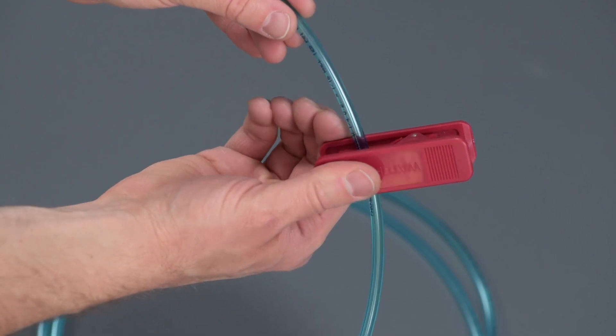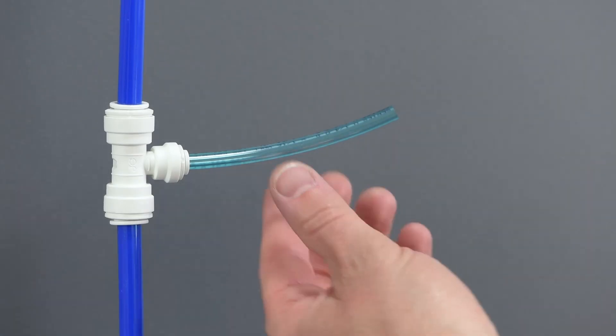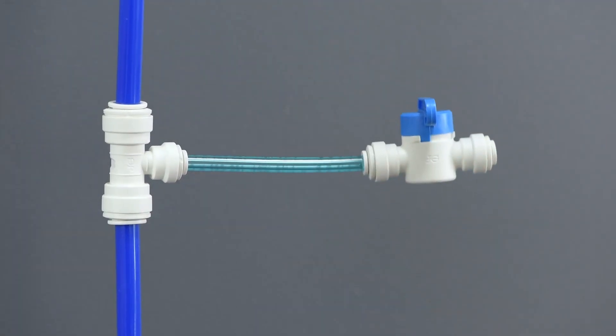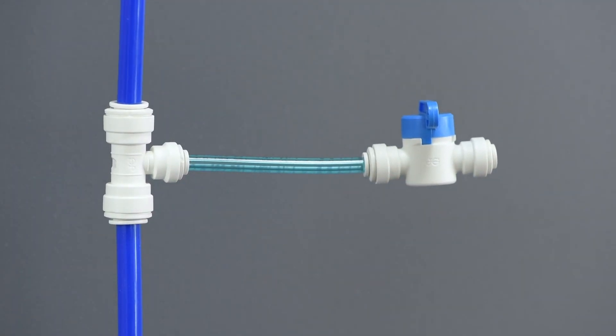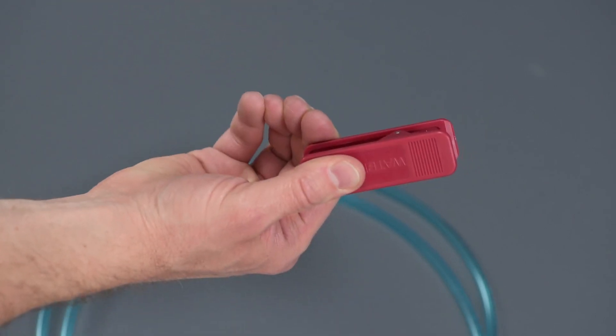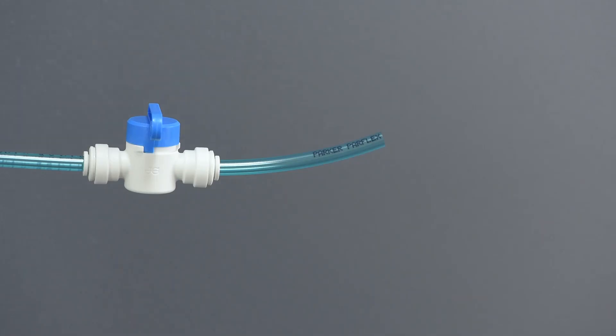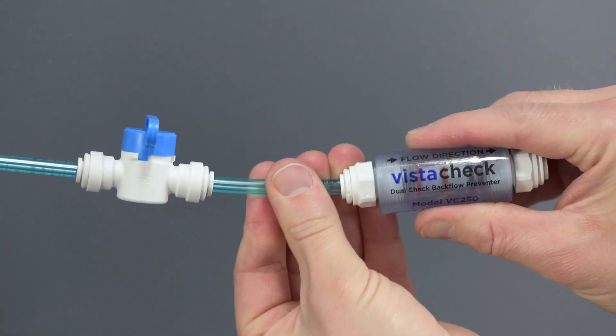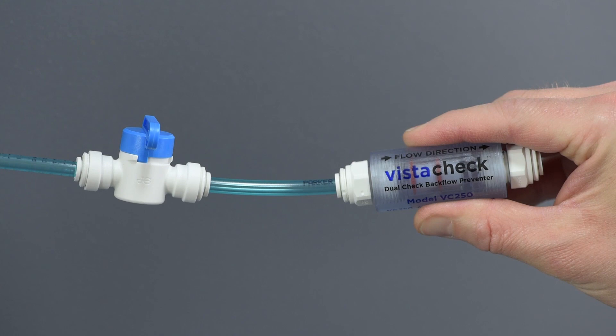Next, cut a 3-4 inch piece of the blue poly tubing and connect the installed fitting from our last step to the inlet of the inline water valve provided. Be sure the valve is in the closed position. That blue lever should be 90 degrees relative to the valve body. Cut another 3-4 inch piece of blue poly tubing and connect one end to the outlet of the inline valve and the other end to the inlet of the supplied CSA certified VistaCheck DualCheck backflow preventer.